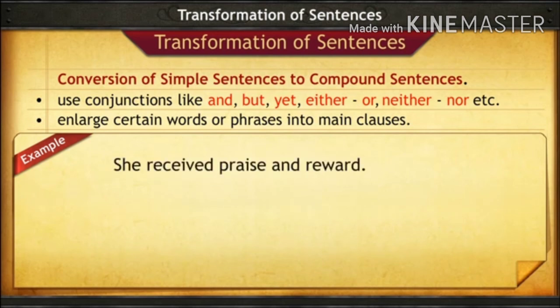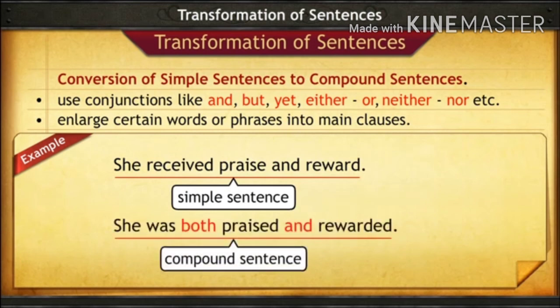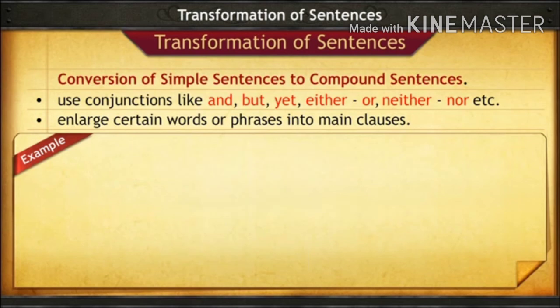Next example — the simple sentence is: 'She received praise and reward.' We will see how it can be changed into a compound sentence: 'She was both praised and rewarded.' Both things happened to her. This is the compound sentence.